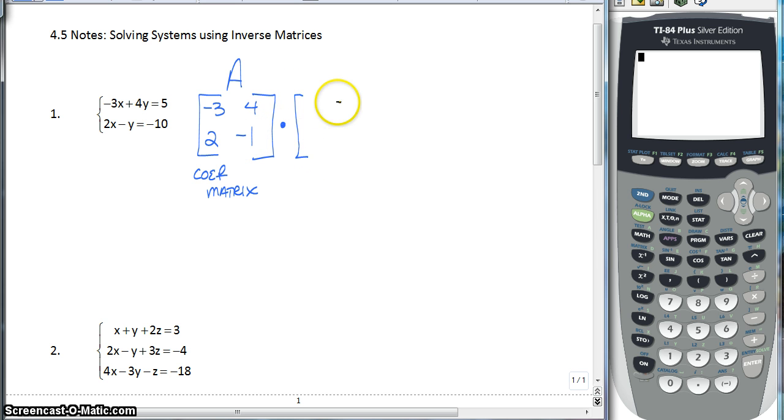Now we have our variable matrix. We're just going to call it matrix X. But it's our variables X and Y. Okay, that's our variable matrix. And that's going to equal B, is what we'll call it. And that is going to be our constant matrix. We have 5 and negative 10. And that's our constant matrix.